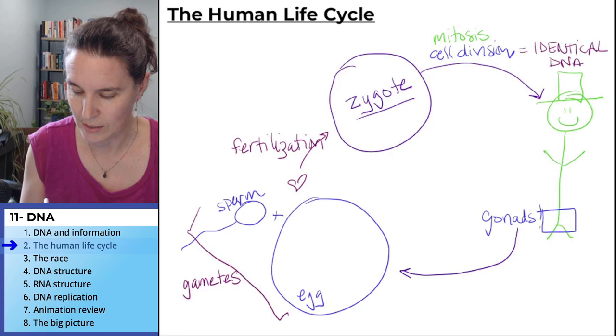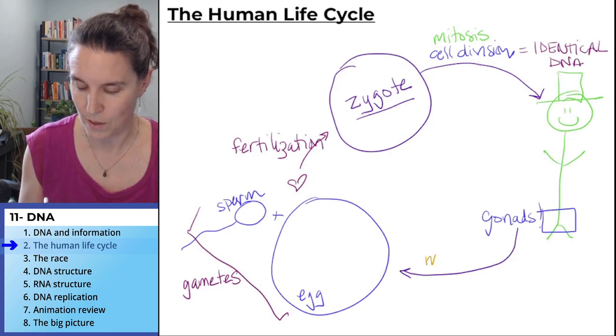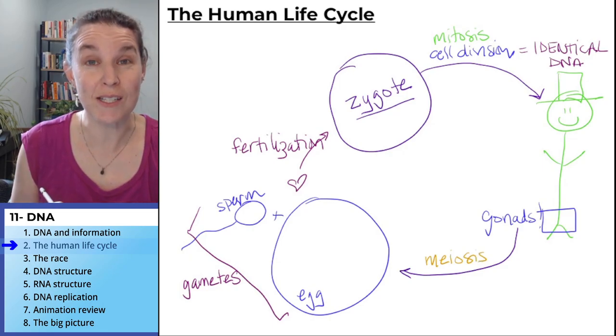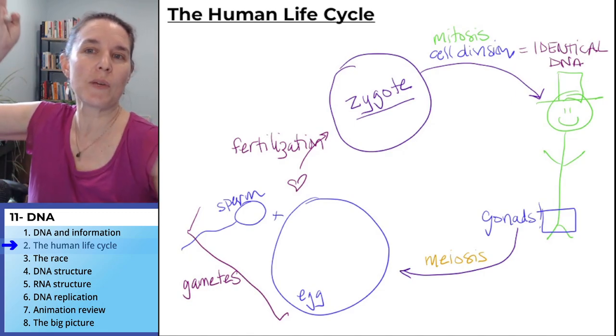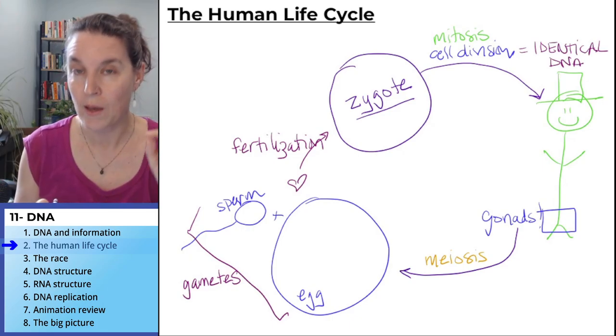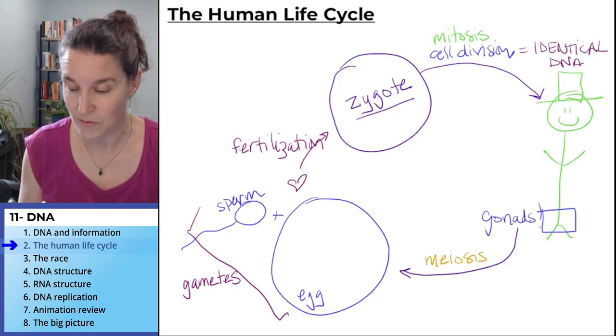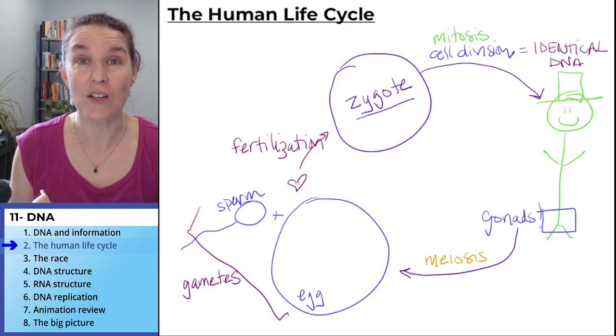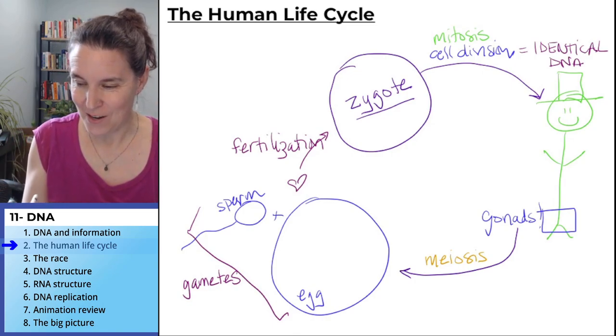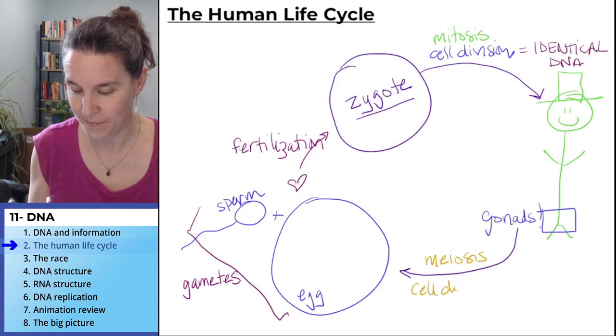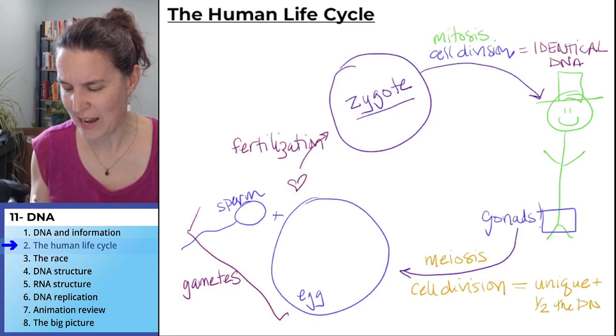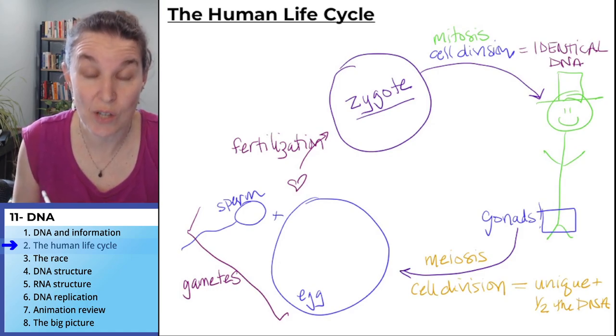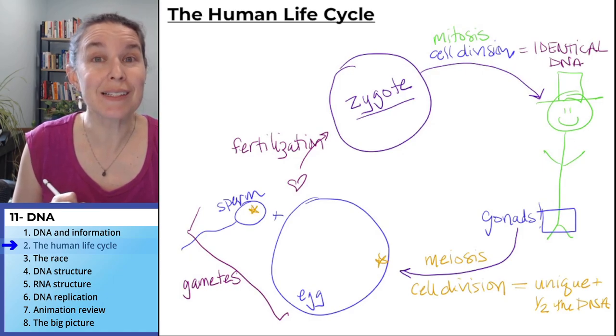And you go through a different process. This process is called, this is going to be a really similar word, meiosis. Mitosis results in identical daughter cells. Mitosis is how you go from being a single-celled zygote to being the fabulous specimen that you are now. Meiosis is also a process of cell division. It's also cell division. But the daughters are unique and half the DNA. And those cells that result are sperm and eggs. Meiosis gives us sperm and eggs.